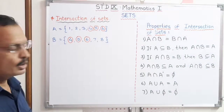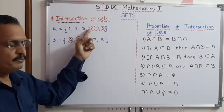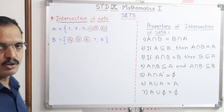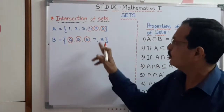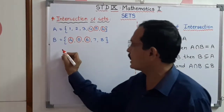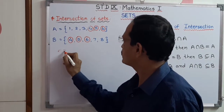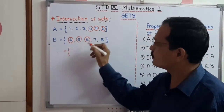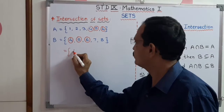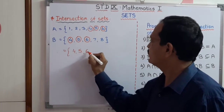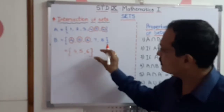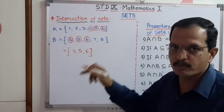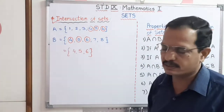Some elements are present in set A as well as in set B. If we make a set of such elements which are common in both sets, the elements present in both sets are 4, 5, and 6. This set of common elements is called the intersection of the sets.